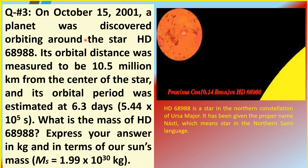We are down to our last question, number three. On October 15, 2001, a planet was discovered orbiting around the star HD 68988. Its orbital distance was measured to be 10.5 million kilometers from the center of the star, and its orbital period was estimated at 6.3 days. What is the mass of HD 68988? Express your answer in kilograms and in terms of our Sun's mass, which is 1.99×10³⁰ kg.